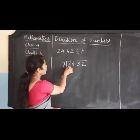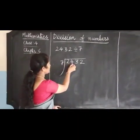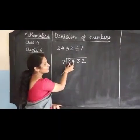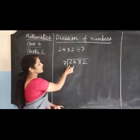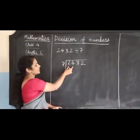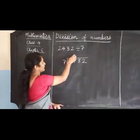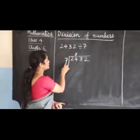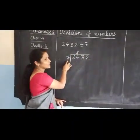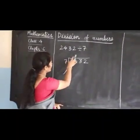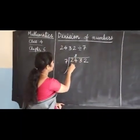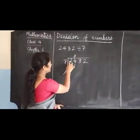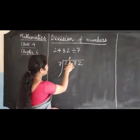Now we look at the next number as well. It has become 24. How many 7s are there in 24? 7 threes are 21. We know from the table of 7 that 7 threes are 21. So 3 should be written just above 24.